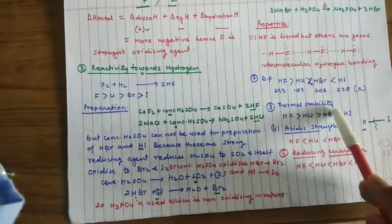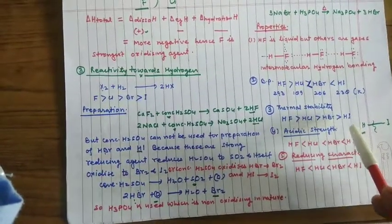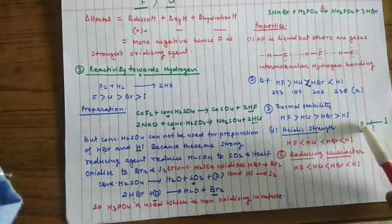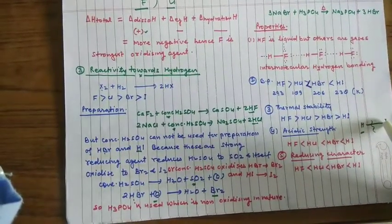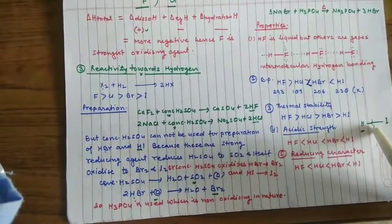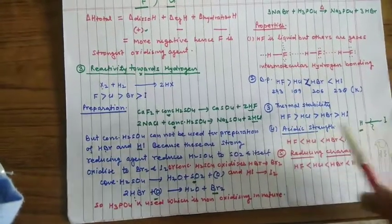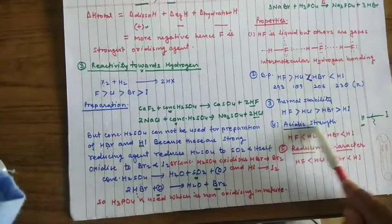If we talk about thermal stability, just as the halogen size increases, hydrogen-halogen bond length will increase. As we know that the longer the bond, the weaker the bond will be broken. This is why the thermal stability down the group will decrease.